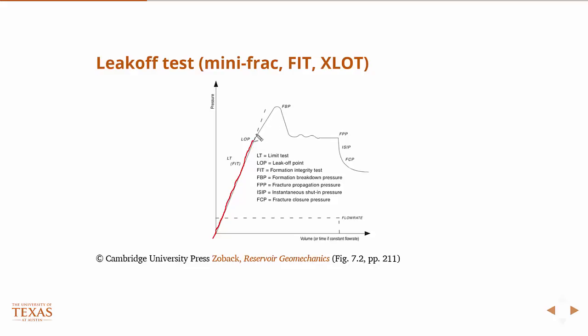But if you continue to pressure this up, you will see an inflection in the curve. That inflection point — the point where there's a distinct change in slope — is known as the leak-off point. This is the point assumed to correspond to S3, ignoring resistivity near the wellbore associated with high viscosity fluid. Or, if you're doing this test in a cased well where you've performed perforations first, the perforations can cause this leak-off point to not be exactly at the minimum principal stress.